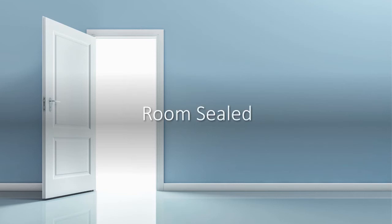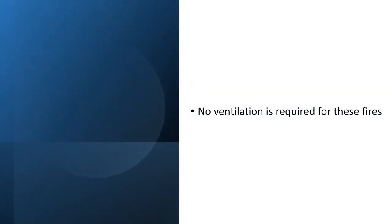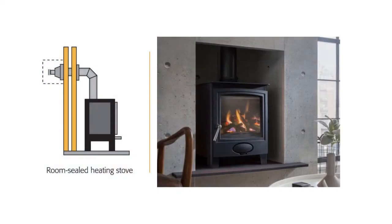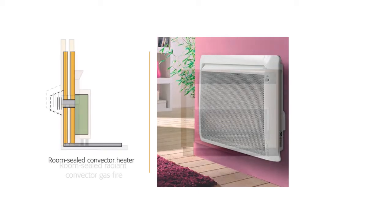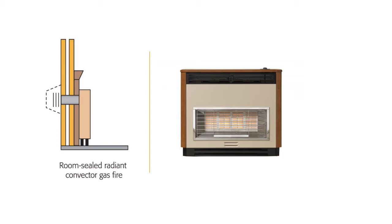You also get fires that are room sealed, and for room sealed appliances you don't require any ventilation at all. Here's a typical room sealed heating stove — it looks like a wood burning fire. With all room sealed appliances, the air is taken from outside of the room and the products of combustion go back outside the room, so there's no need for ventilation. Here's a room sealed convector heater — they usually hang on the wall, but again no ventilation required. You also get them as radiant convector gas fires — they look like a normal old-fashioned gas fire, but they're room sealed.